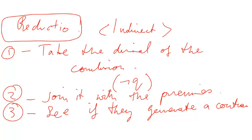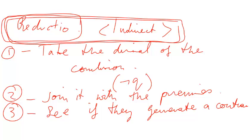In an indirect proof of this kind, the purpose is to show that the denial of the conclusion cannot be the case. If the denial of the conclusion cannot be the case, then you know that the conclusion must be the case. A reductio assumes that if you have the denial of the conclusion and that generates a contradiction — meaning always false in all possible circumstances — once you join the denial of the conclusion to the premises and generate a contradiction, then the conclusion must be the case. So if I'm arguing for A and I can prove that not-A is impossible, then we must conclude A.